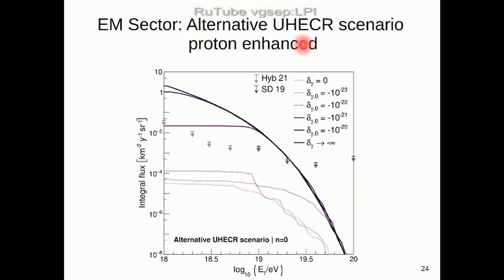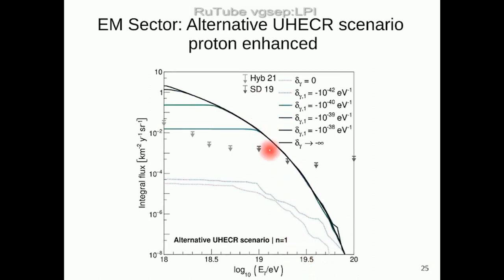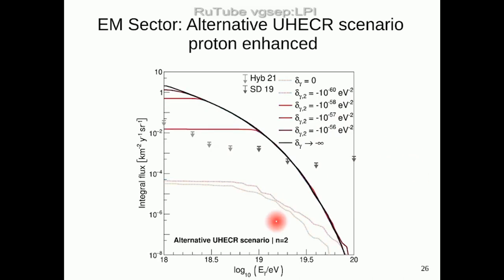We then changed to the proton-enhanced scenario. When you have more protons than nuclei, you create more photons. Starting from the Lorentz invariant case at the bottom, you increase the break — more break means more photons — up to the point where you add too much break and get more photons than allowed by the upper limits, therefore setting the maximum value of the break allowed by data. We did this for the first term (n=0) and for the second term (n=1), and for n=2 we can also set limits under the proton-enhanced scenario.